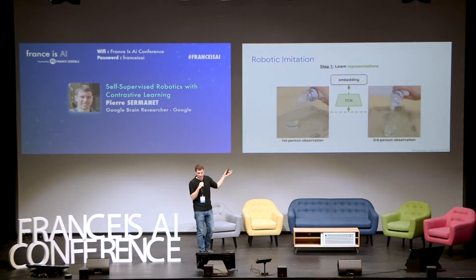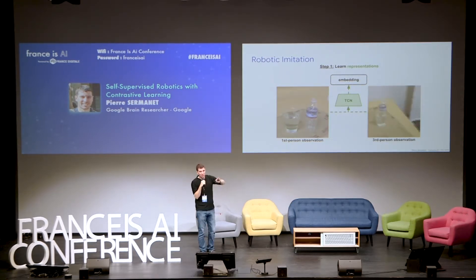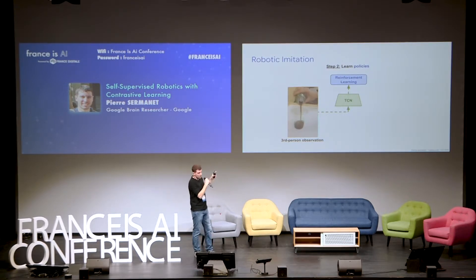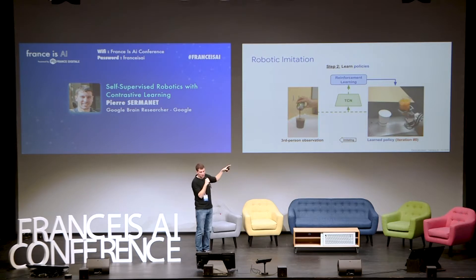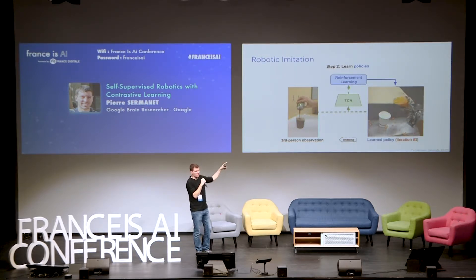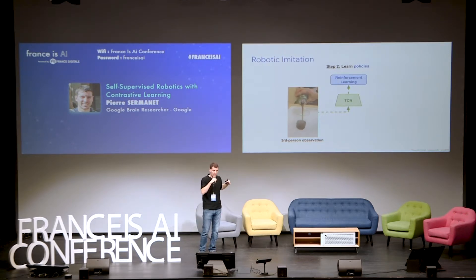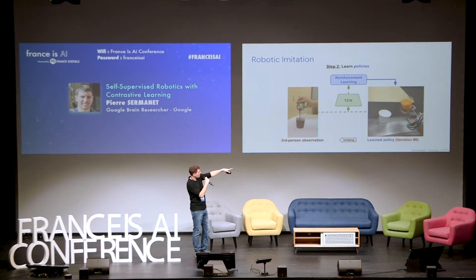So how do we use this for robotic imitation? First, we learn the embedding from a collection of raw unlabeled videos — these videos don't have to be just positive demonstrations, we can just learn from pixels. Second, we learn reinforcement learning on top of that embedding space. Given a single demonstration video from a human, this produces a single trajectory in embedding space through the TCN representation. The robot feeds its own visual feedback into that TCN and gets a new trajectory, and the goal is to imitate the same trajectory in embedding space. After only nine iterations, the robot manages to figure out how to pour. This only works because we use pre-training — if you try to do that right from the RL signal, it would just not work.